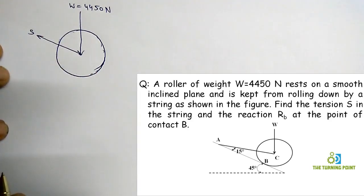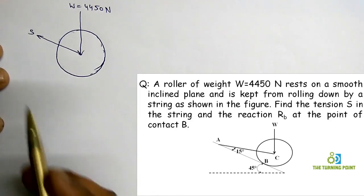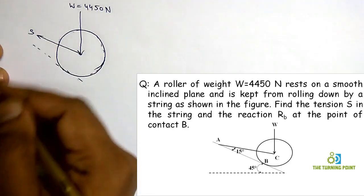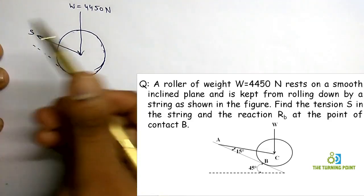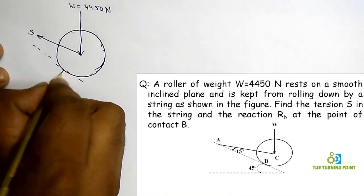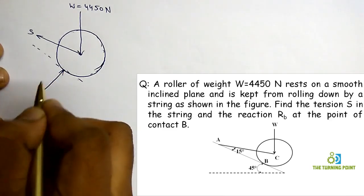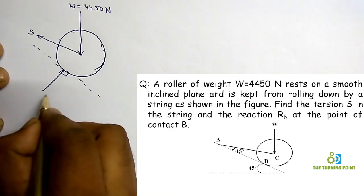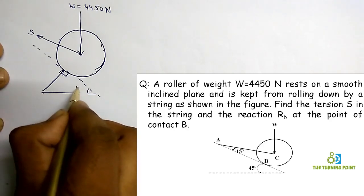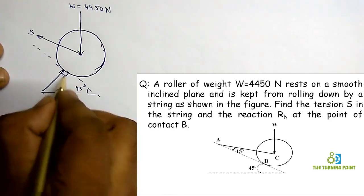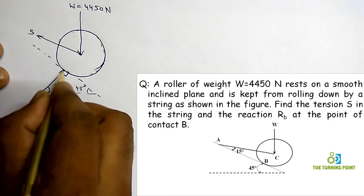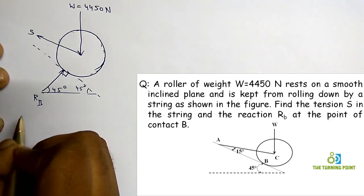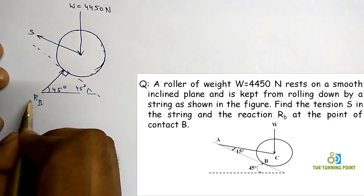Along the string there will be a tensile force. Let S be the tensile force in the string. The roller is not able to move in the direction of the inclined plane because of the restriction from the inclined plane. So in the opposite direction, perpendicular to the surface at the point of contact, you need to represent a reaction perpendicular to the surface. This is given as 45 degrees, so this reaction at point B is RB.